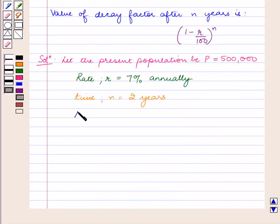According to the formula the amount A will be equal to P into 1 minus R upon 100 raised to power n.